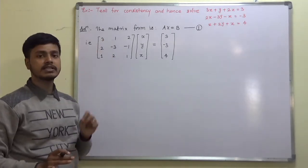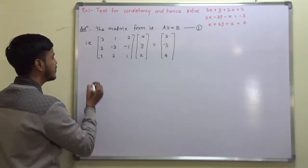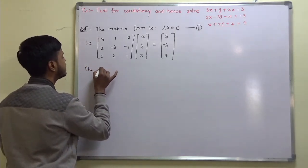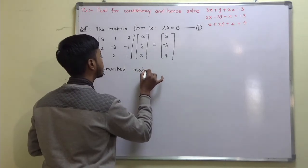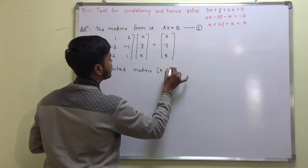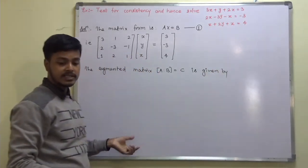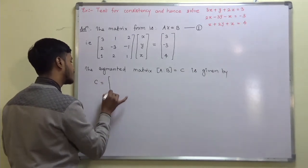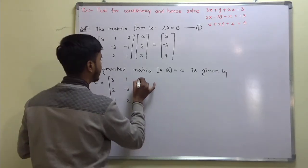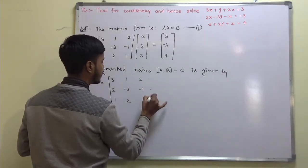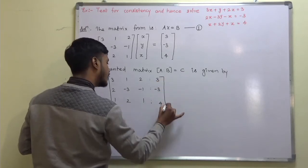When dealing with problems on this topic, first write down the matrix form. Then write down the augmented matrix. The augmented matrix [A|b], which we denote by C, is given by: 3, 2, 1 | 3; then 1, -3, 2 | -3; then 2, -1, 1 | 4.